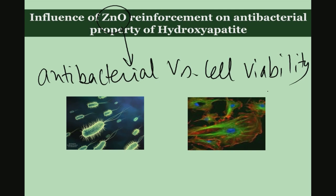The idea is that one can add zinc oxide in an optimal amount so that it will induce antibacterial or bactericidal properties. Bactericidal and bacteriostatic properties have been mentioned in earlier modules. Here we will see what bactericidal property results from the addition of zinc oxide, but at the same time zinc oxide addition should not inhibit cell growth or cell function on the substrate. This is very critical because adding silver or zinc oxide may potentially cause toxicity to eukaryotic cells.